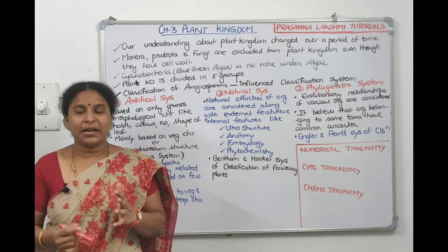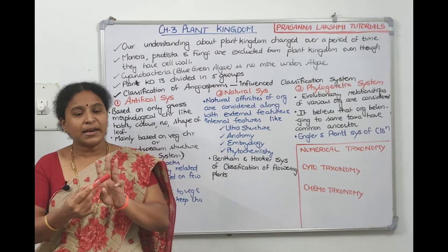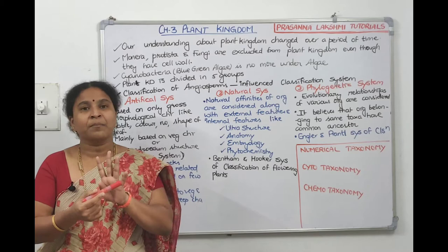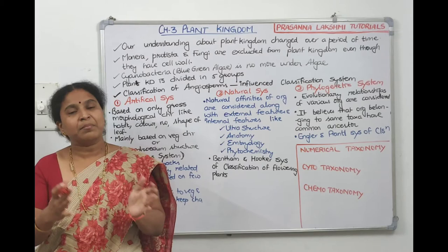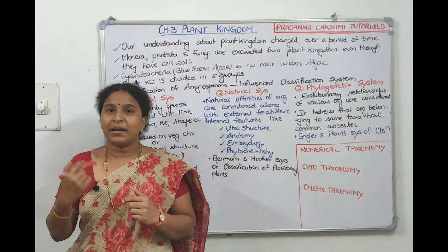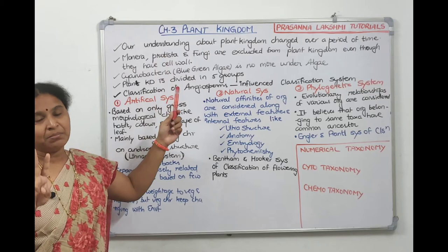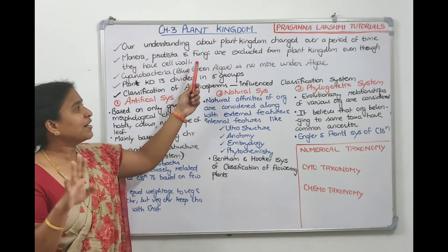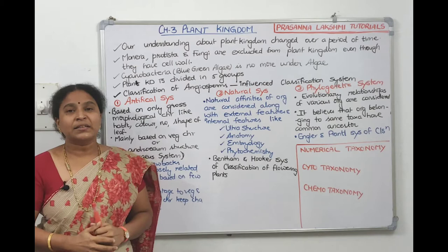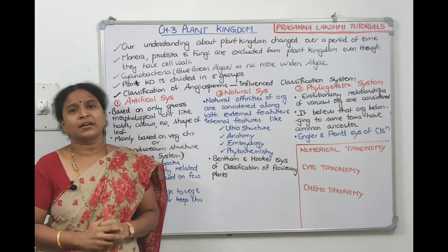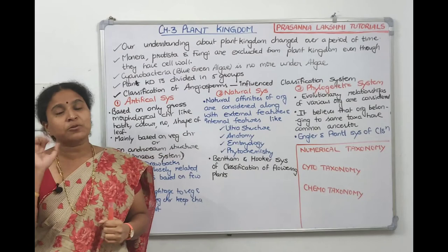Our understanding about the plant kingdom kept changing. In three-kingdom classification, unicellular organisms were removed and kept under Protista by Ernst Haeckel. In four-kingdom classification, unicellular prokaryotic organisms were placed under Monera. In five-kingdom classification, Whittaker removed fungi from plant kingdom and made it a separate kingdom. Cyanobacteria, once called blue-green algae under plant kingdom, are now placed under Monera.